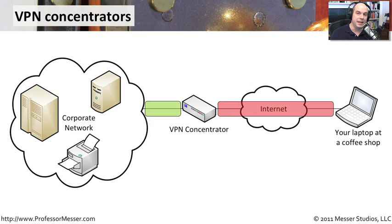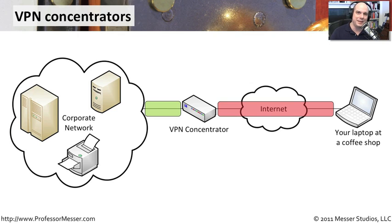It may not just be one person — it may be many, many different people, in some cases hundreds or thousands of people connecting through these encrypted tunnels back to the VPN concentrator, creating that virtual private network. Because all of that traffic is encrypted, even if somebody did get their hands on those packets, they wouldn't be able to do anything with them because all of the data inside is protected.